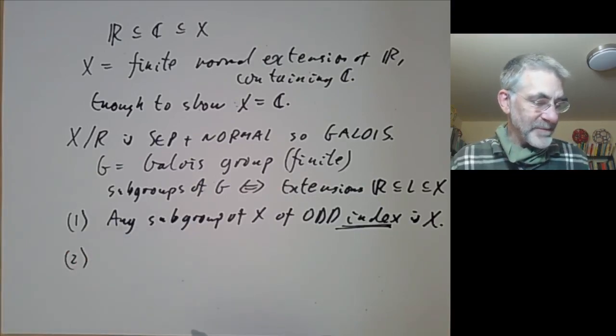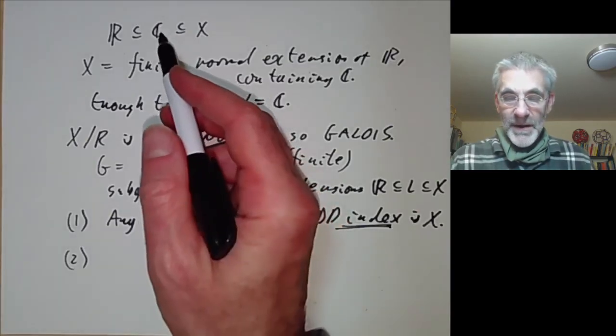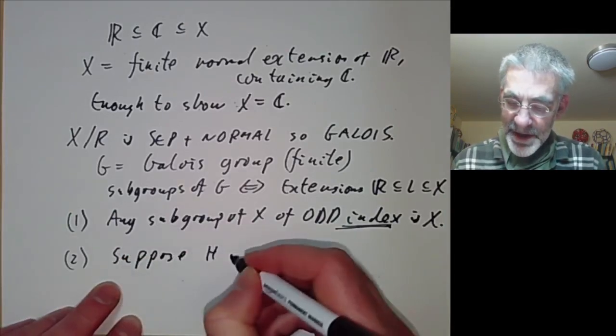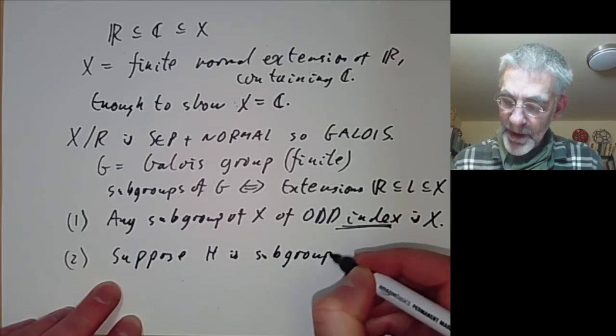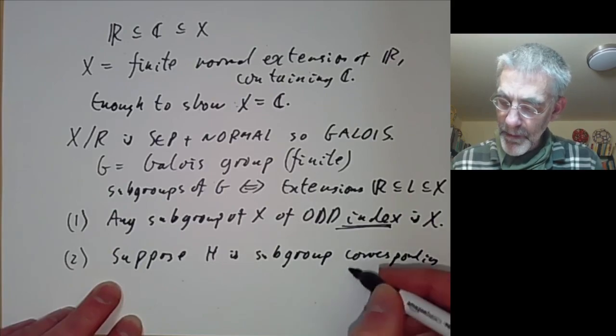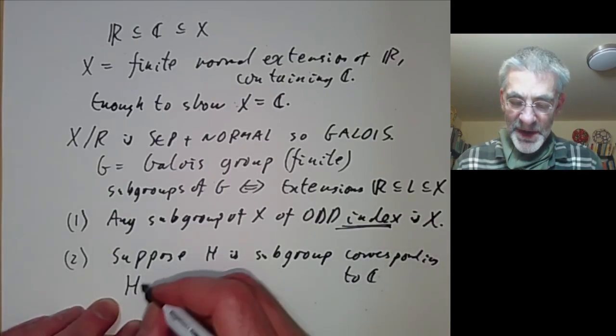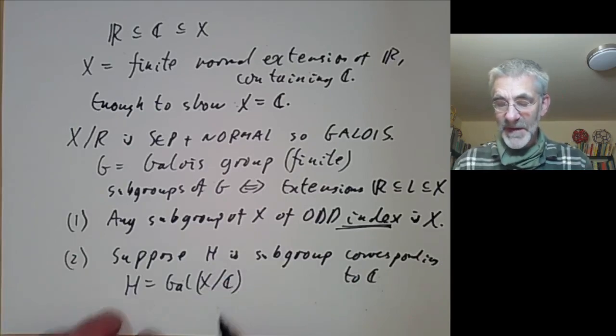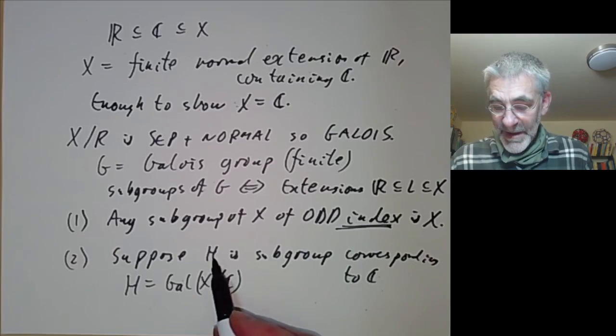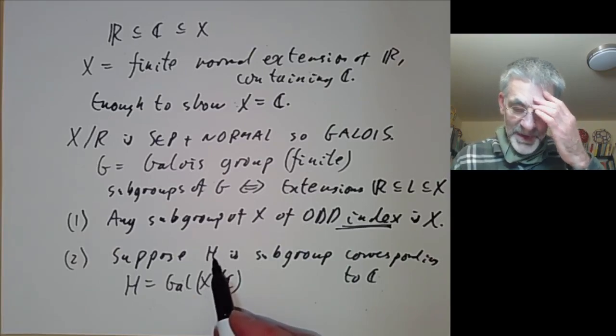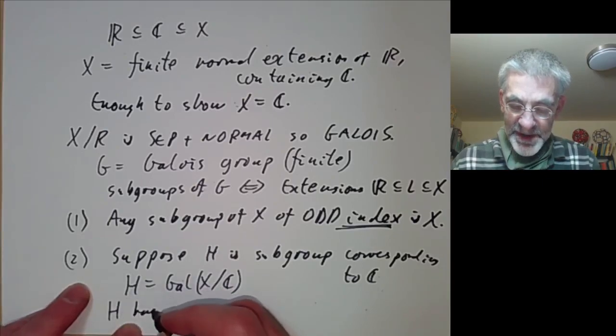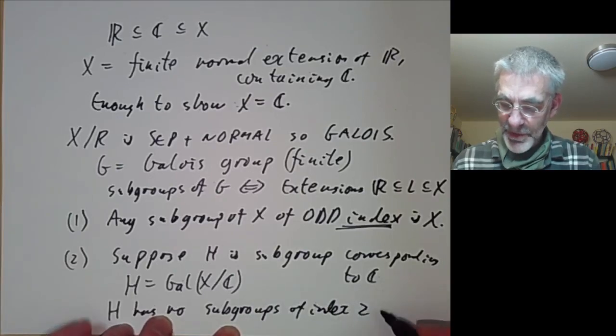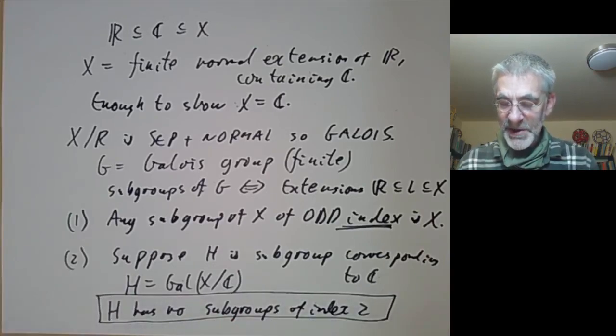Now the other condition was that C has no extensions of degree 2. So suppose H is the subgroup corresponding to C. By the Galois correspondence, this just means that H is the Galois group of X over C. So the automorphisms of X fixing all elements of C. Extensions of C now correspond to subgroups of H. So H has no subgroups of index 2 because we said that C has no extensions of degree 2.